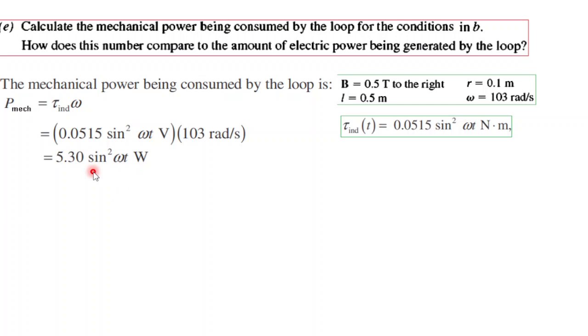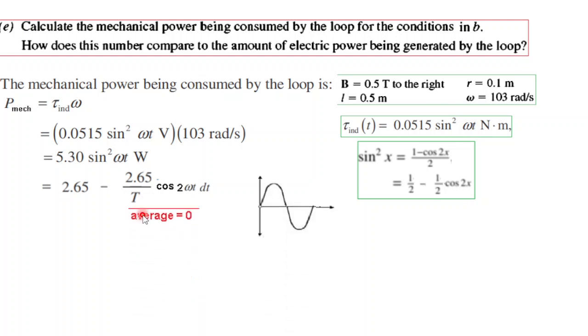Now to compare we have to put it in the same form that we had the electrical power. And to do that we will again use the formula for sine squared. This was the formula. So plugging in we get this term here. Now again we can conclude that average power of this sinusoidal signal will be zero over long time.